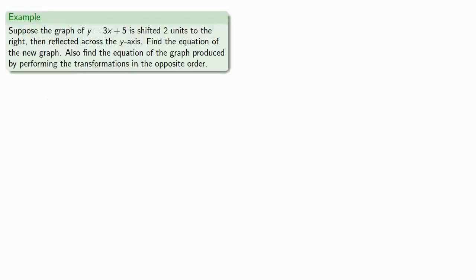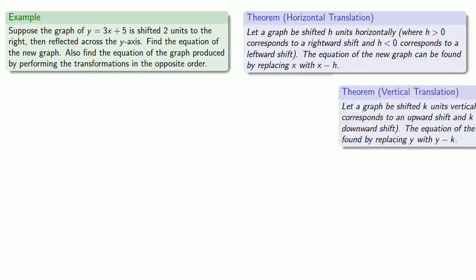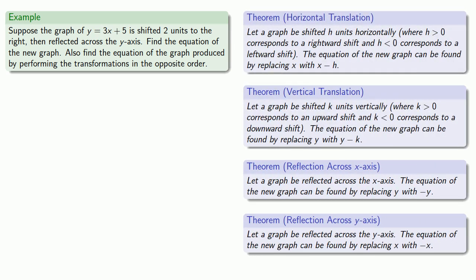So, let's see what happens. Suppose the graph of y equals 3x plus 5 is shifted 2 units to the right, then reflected across the y-axis. Let's find the equation of the new graph. Also, let's find the equation of the graph produced by performing the transformations in the opposite order. So again, we have our formulas for the transformations, but we don't really need them.